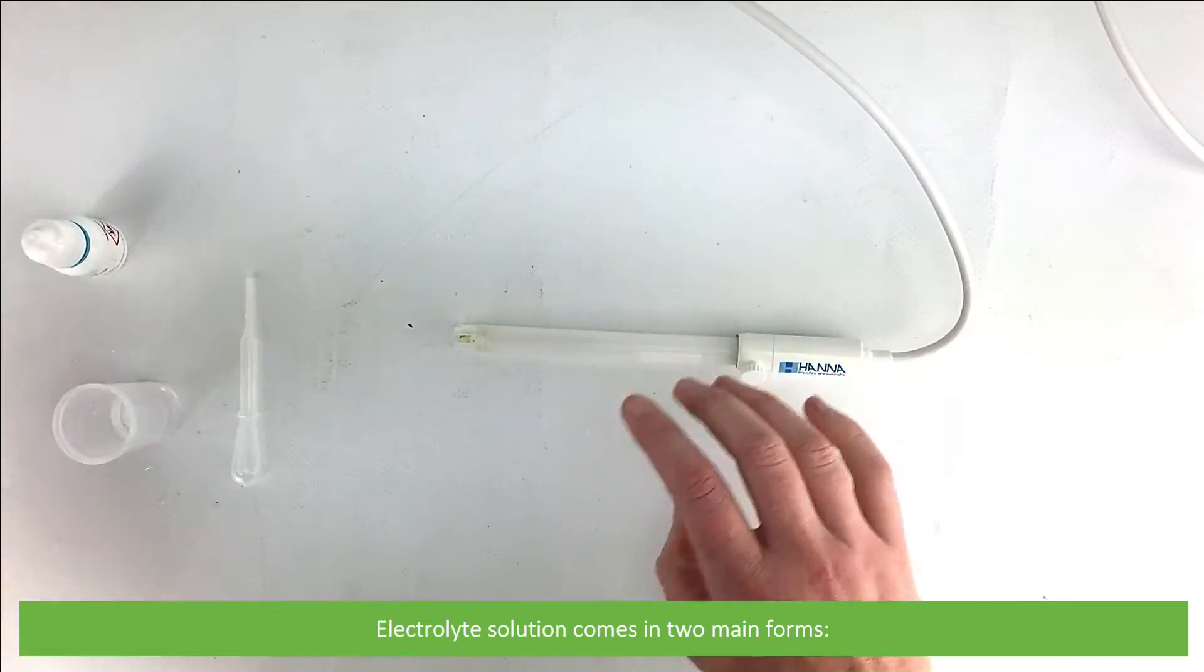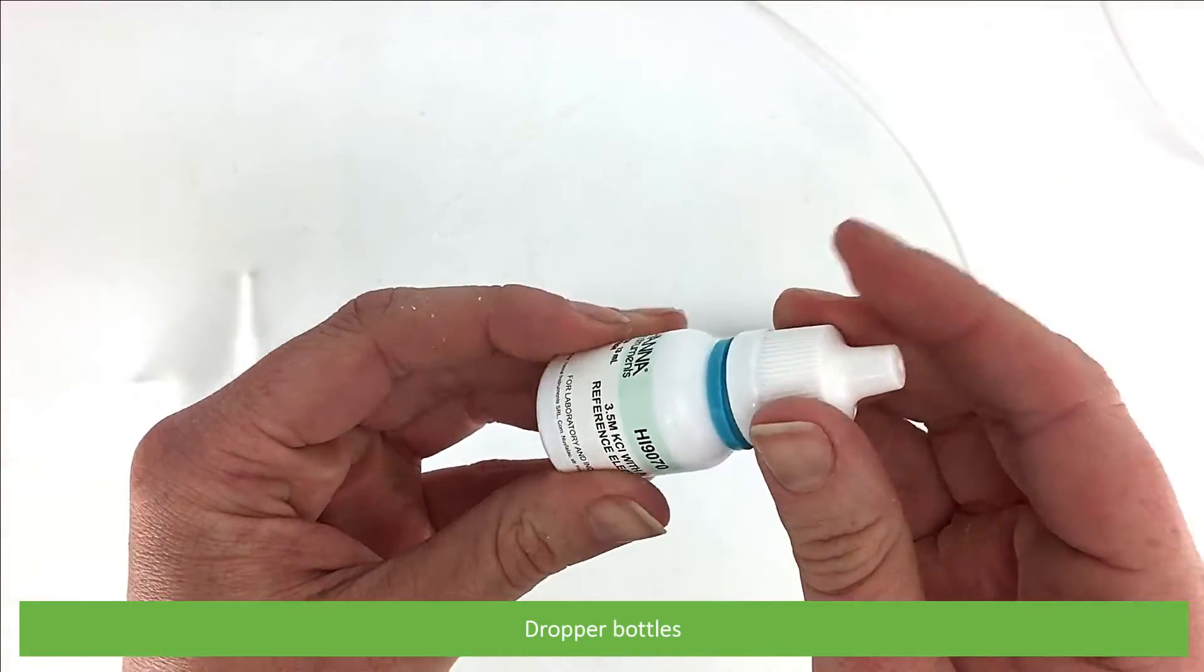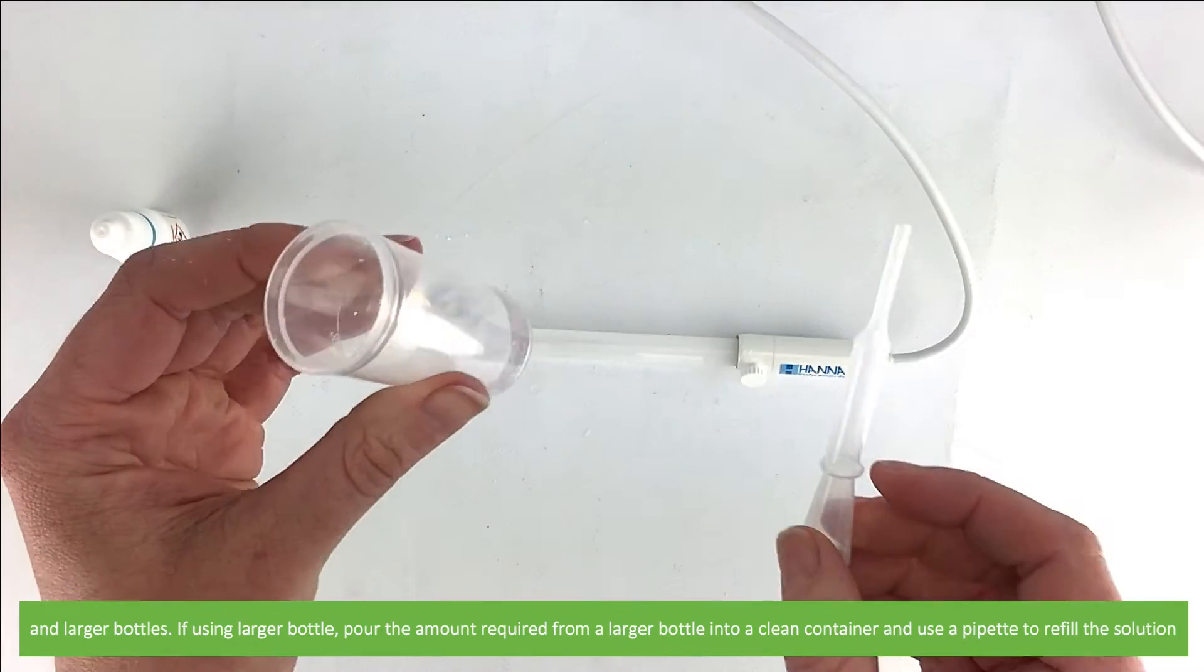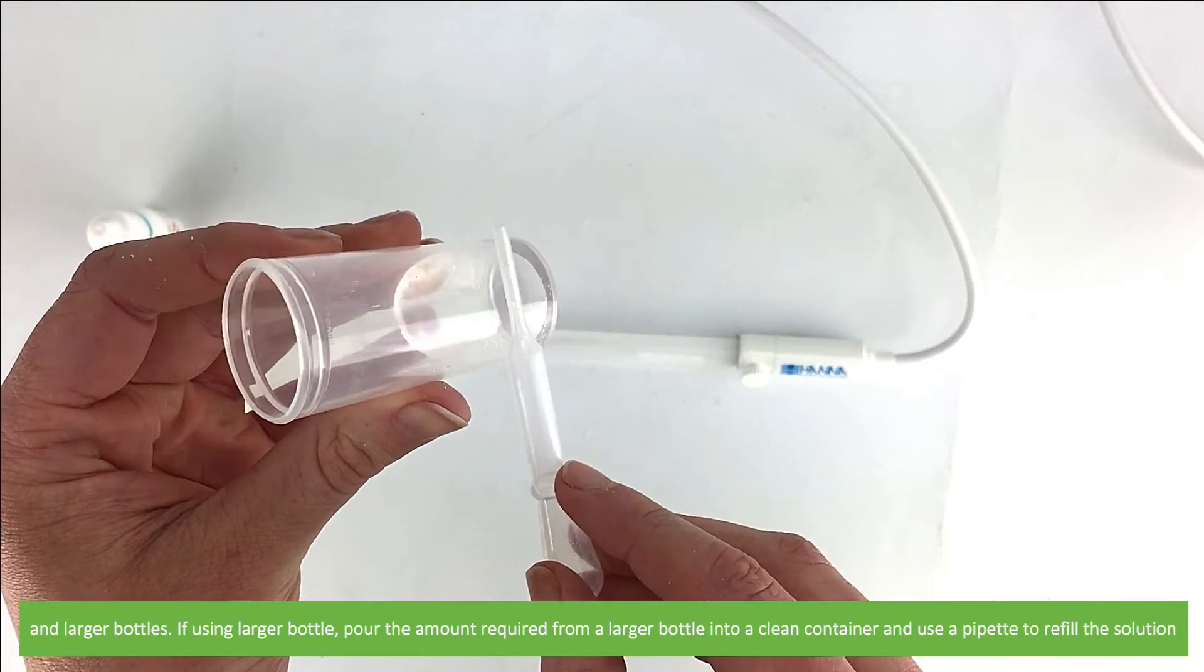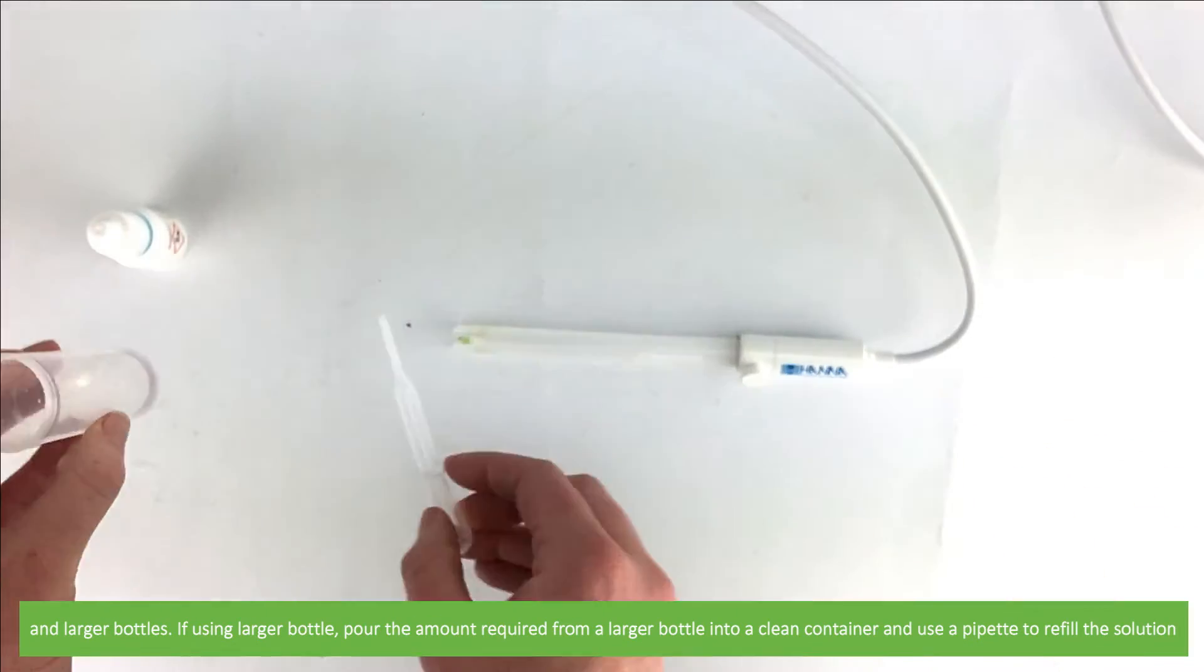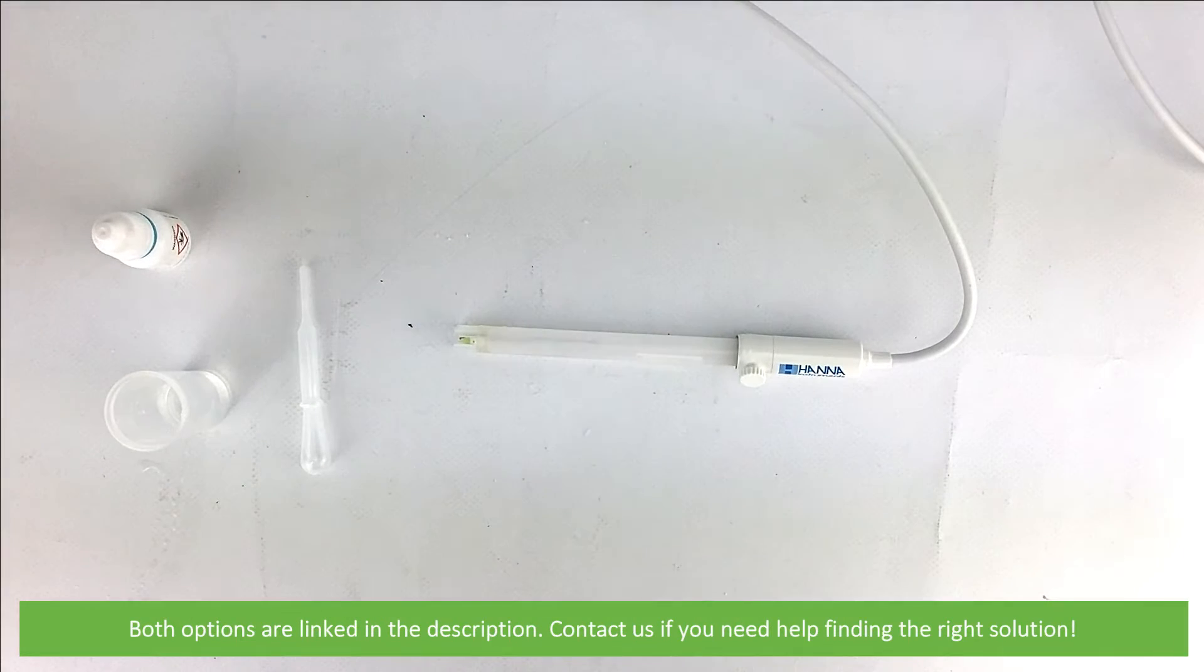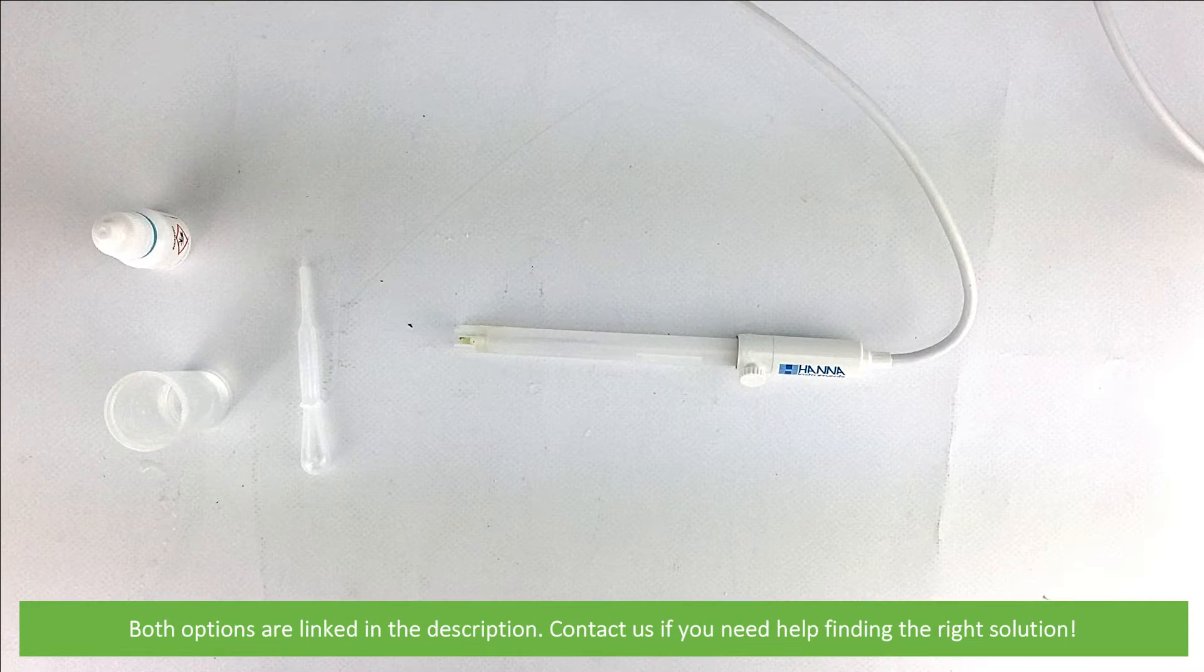Electrolyte solution comes in two main forms: in dropper bottles or in larger bottles. If you're using a larger bottle, pour the amount required into a clean container and use a pipette to refill the solution. Both options are linked in the description. Contact us if you need help finding the right solution.